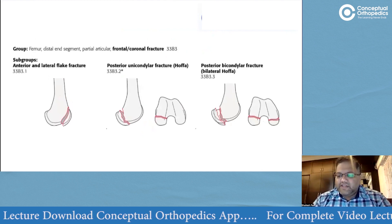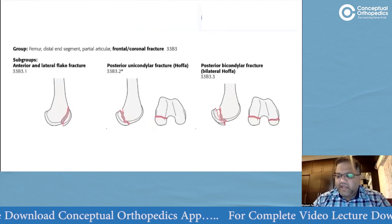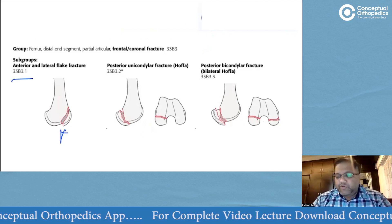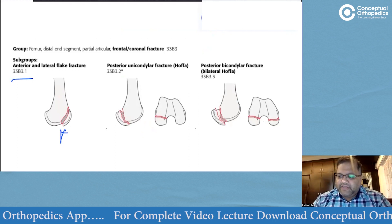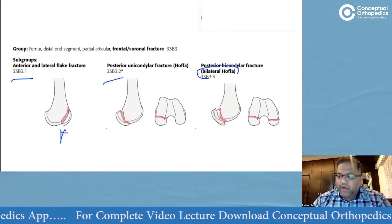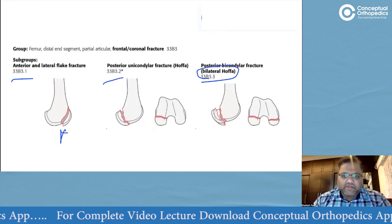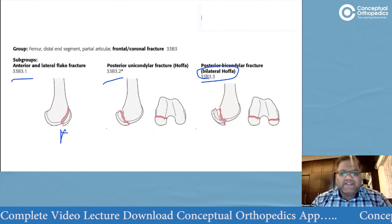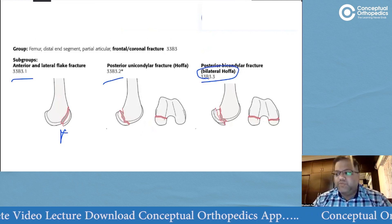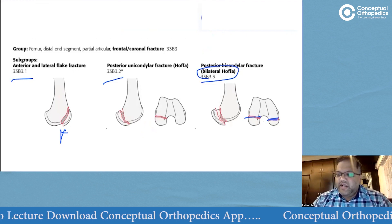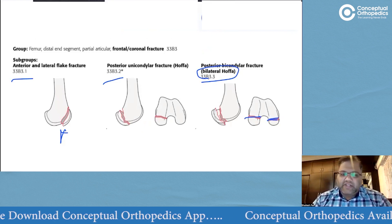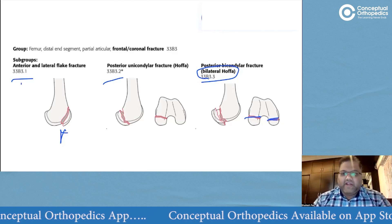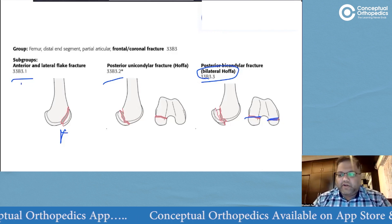For Hoffa fractures (B3): a lateral Hoffa is B3.1, a posterior unicondylar Hoffa is B3.2, and a bicondylar Hoffa — involving both medial and lateral condyles — is B3.3. So anterior is B3.1, posterior is B3.2, and bicondylar is B3.3.